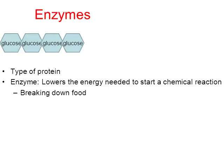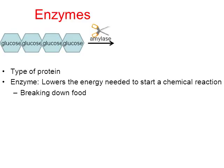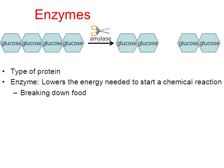One example where enzymes are required is the digesting and breaking down of food. Pretend the picture shows a molecule of starch made from four glucoses bonded together. There's an enzyme called amylase, shown here symbolically as animated scissors. I can tell just by the spelling that amylase is an enzyme — enzymes typically end with the suffix '-ase.' What amylase does is break that four-glucose molecule into two smaller fragments.